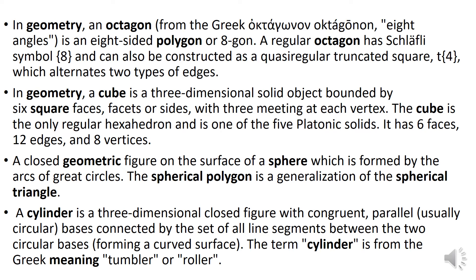A cylinder is a three-dimensional closed figure with congruent parallel, usually circular, bases connected by the set of all line segments between the two circular bases, forming a curved surface. The term cylinder is from the Greek meaning tumbler or roller.